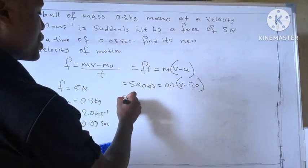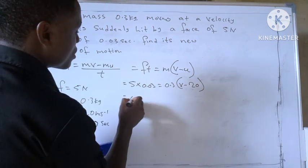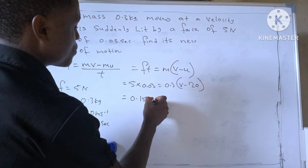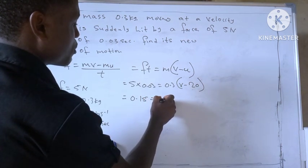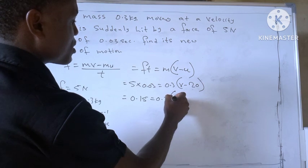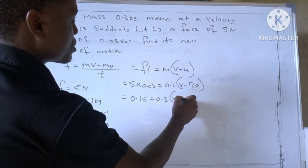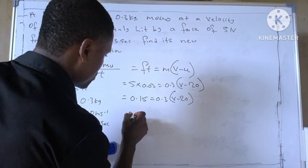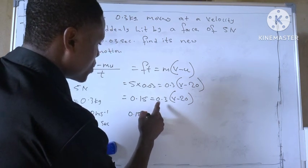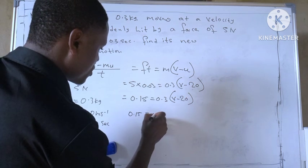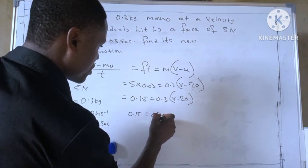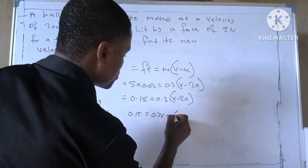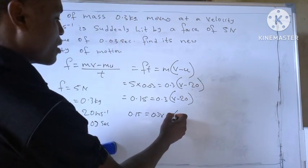So 5 times 0.03 is 0.15, equal to 0.3 times V minus 20. So we have 0.15 equal to 0.3V minus 0.3 times 20 to give us 6.